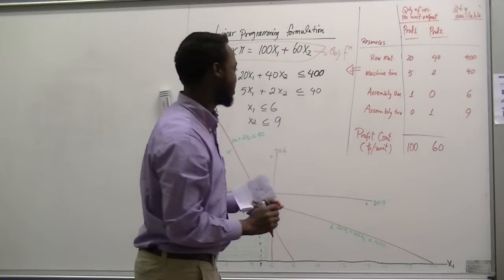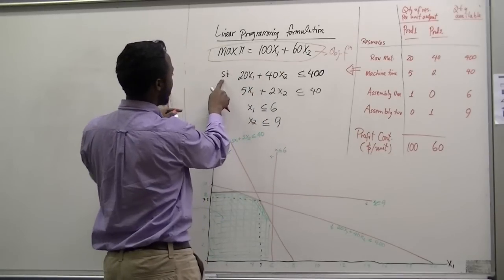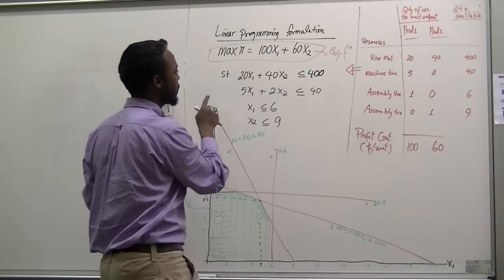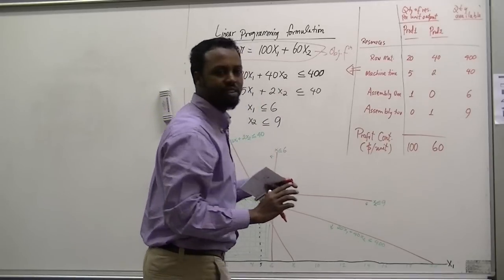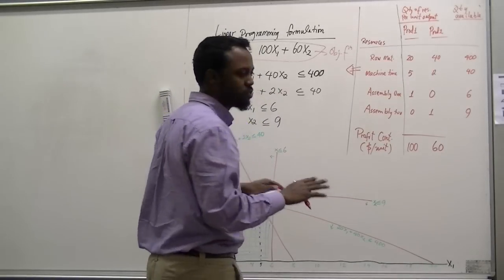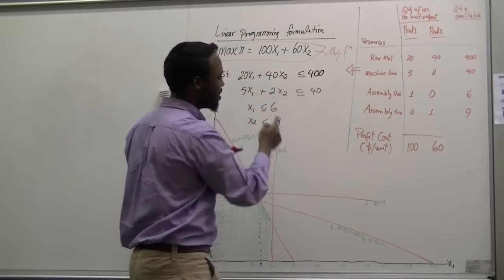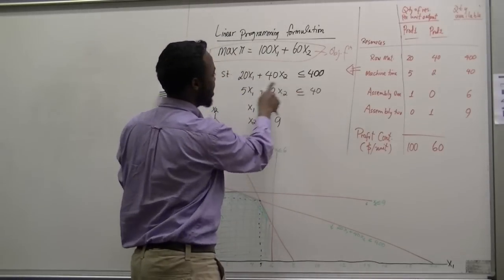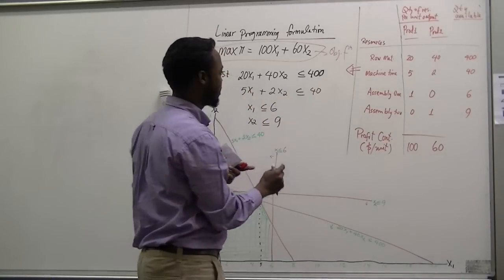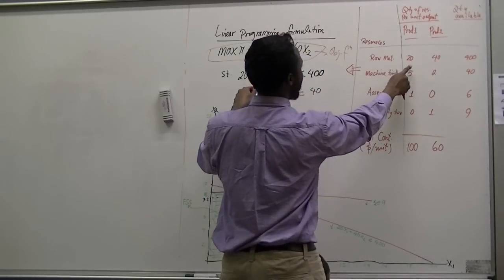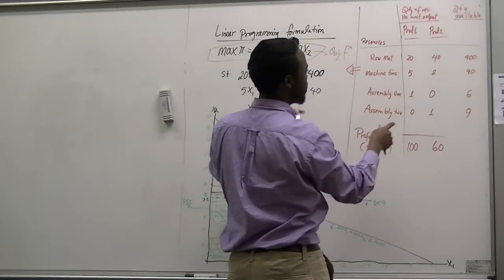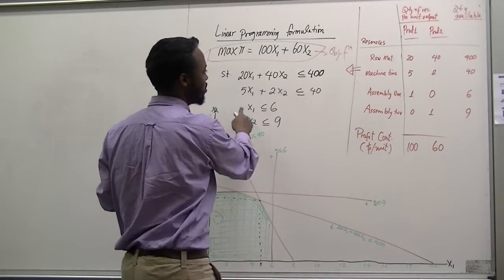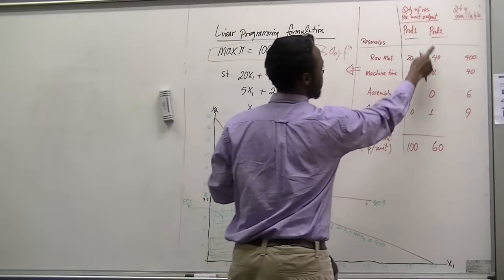This is our objective function, and we write 'subject to' (s.t.) to introduce our constraints. There is no free ride — our profit is restricted by the resources available to us. The raw material constraint is 20x₁ plus 40x₂, which cannot be more than 400, so it is less than or equal to 400.